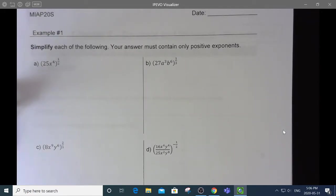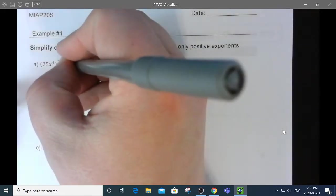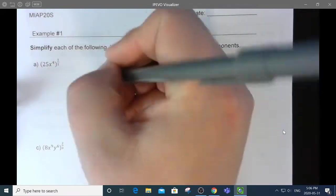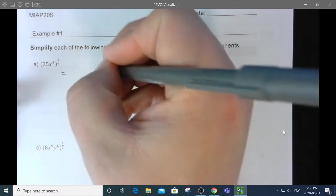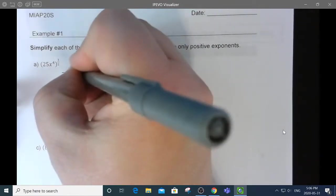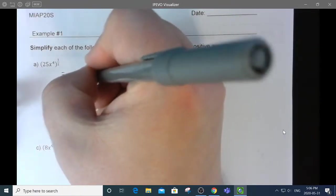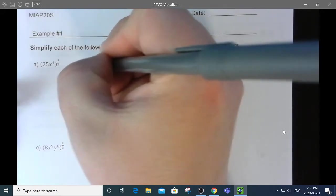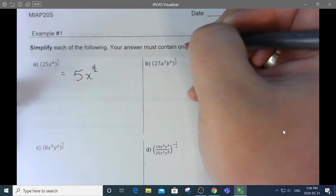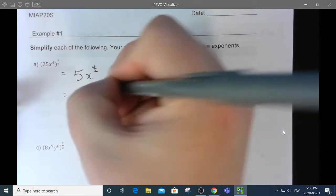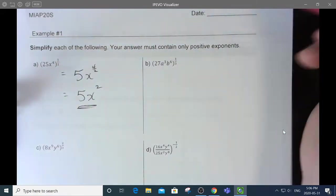Now, some that have rational exponents. This is like saying 25 square rooted and x to the 4 square rooted. So, that's going to be like saying the square root of 25, which is 5. And this is like saying x to the 4 times 1 half, which is 4 halves, which is like saying 5x squared. Simplified.